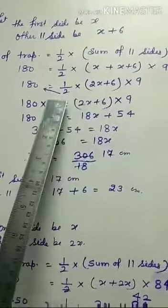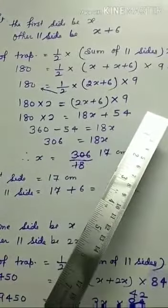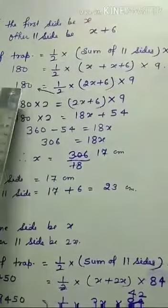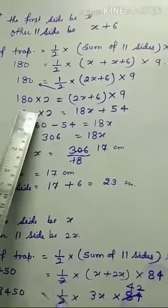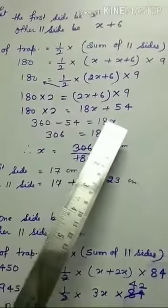Now 180 equals 1/2 times (2x + 6) times 9. Multiply to the other side: 180 times 2 equals (2x + 6) times 9.